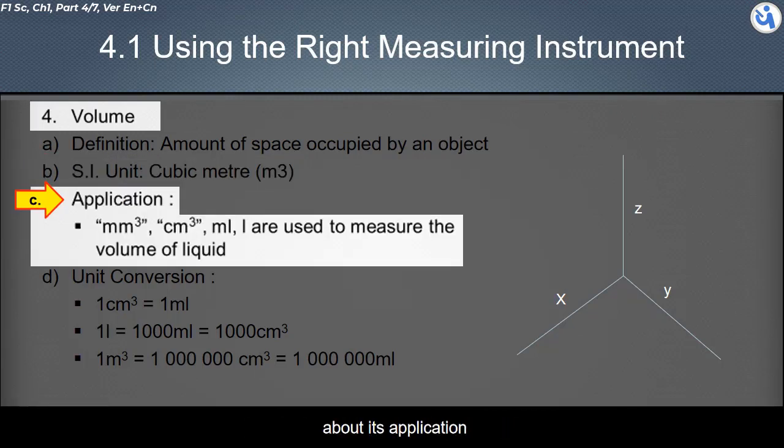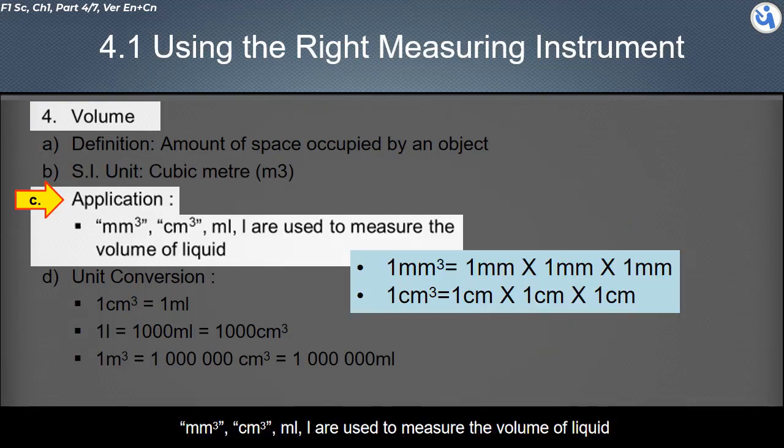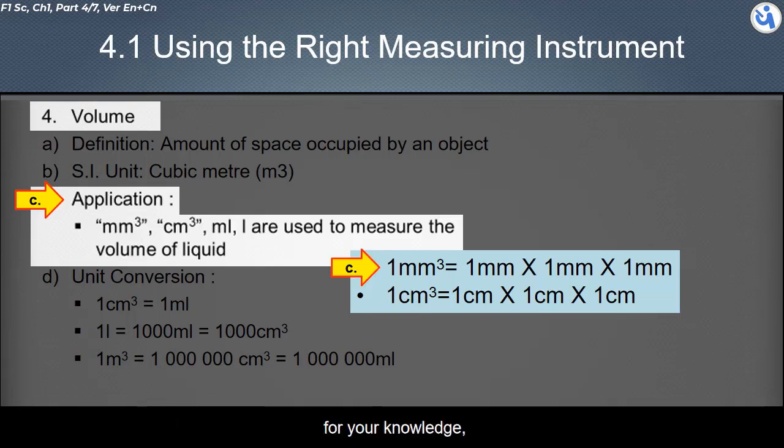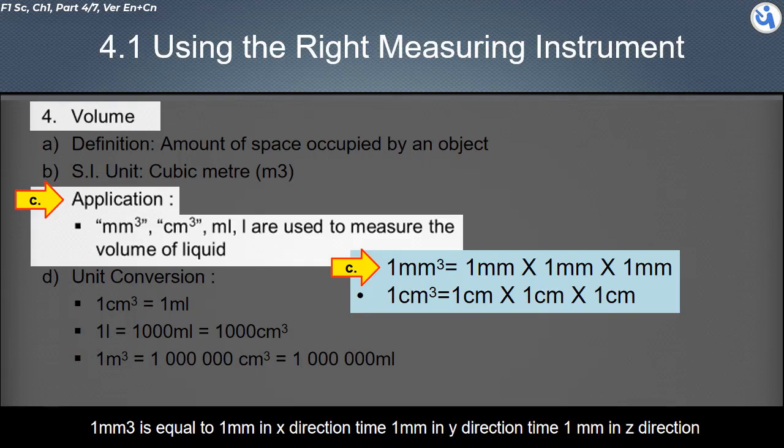About its application. Cubic millimeter, cubic centimeter, milliliter, and liter are used to measure the volume of a liquid. For your knowledge, one cubic millimeter is equal to one millimeter in X direction, multiplied with one millimeter in Y direction, multiplied with one millimeter in Z direction.